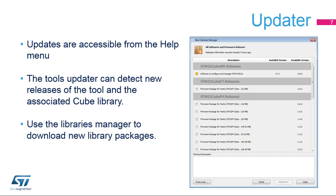If the internet connection is configured correctly, the tool can update itself as well as the code libraries used for generating project workspaces. Use the Install New Libraries option (ALT+U) to download additional STM32 libraries or retrieve older versions for interoperability reasons. However, note that the STM32CubeMX tool is not tested with all historical library releases, and new library releases may not work correctly with old tool versions.